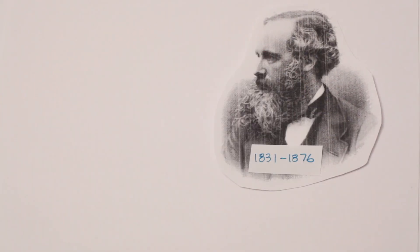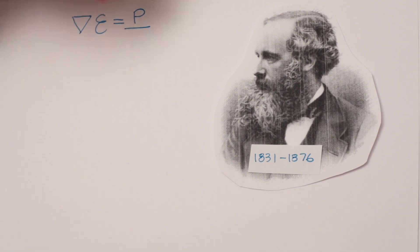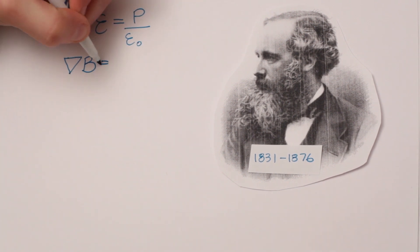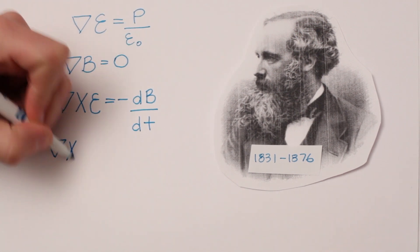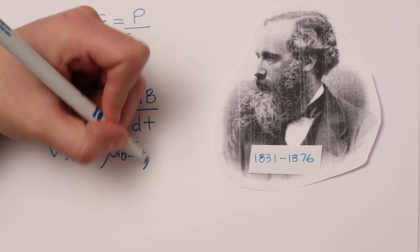James Clark Maxwell summarized electricity and magnetism into four equations. The last two predicted that electric and magnetic fields can form self-propagating waves whenever a charge is accelerated. These equations predicted the speed of light.